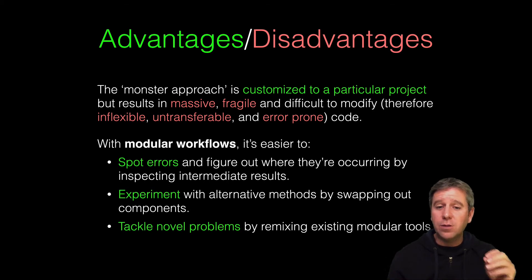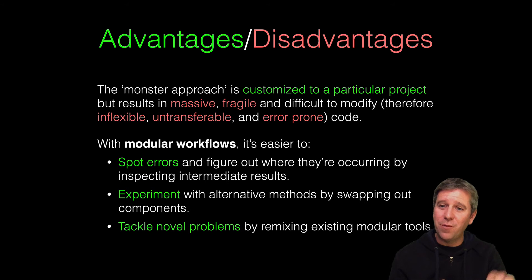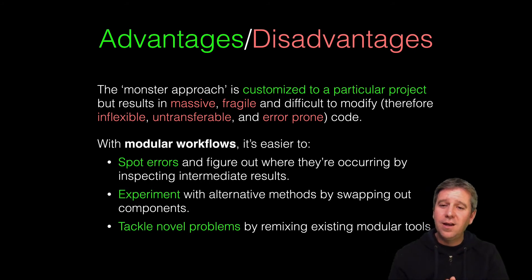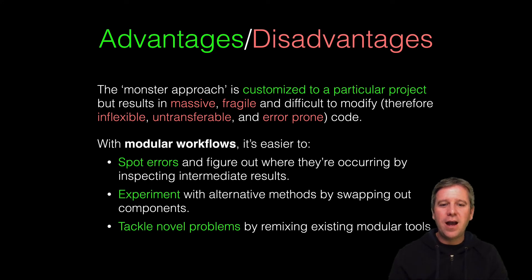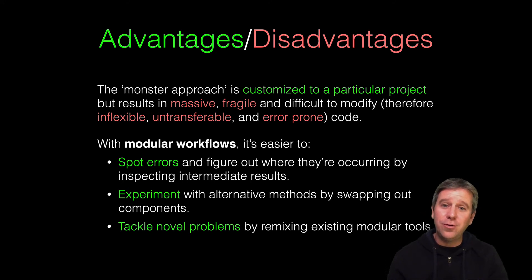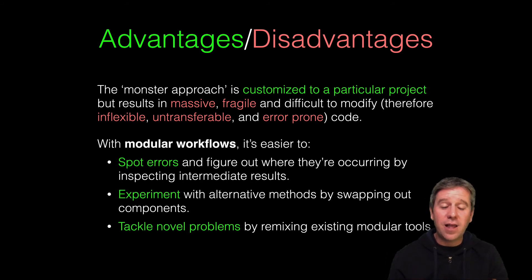With the UNIX modular approach, you can spot errors more easily because you can figure out where they're occurring by inspecting intermediate results as you go from one module to the next. You can also more easily experiment with other approaches — for example, swapping out a module that does a BLAST search for one that does a HMMER search. It allows you to tackle novel problems by remixing existing modular tools.